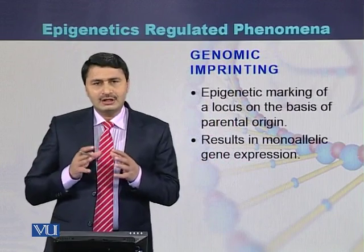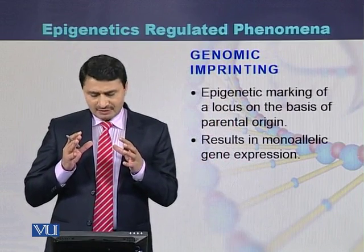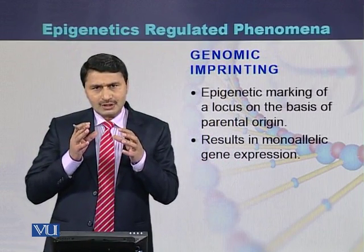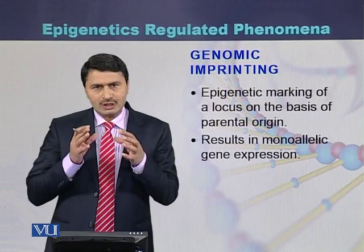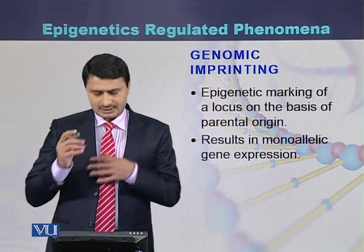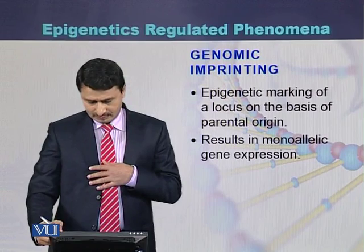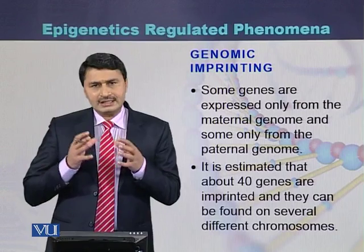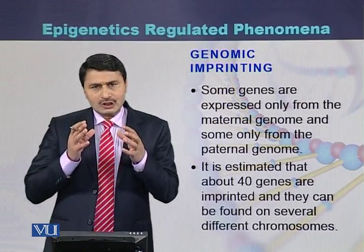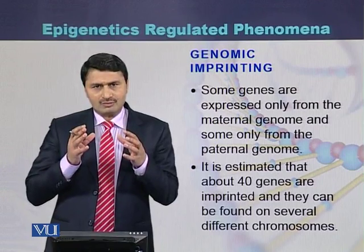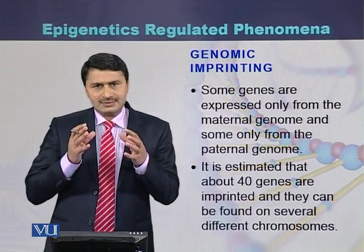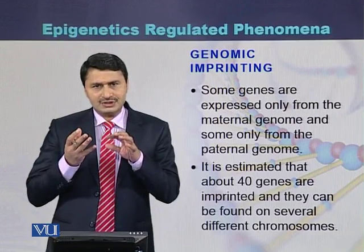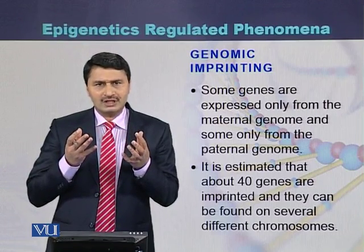Genomic imprinting is a phenomenon in which, out of two alleles, only one allele has expression. Individuals inherit two sets of chromosomes. Sometimes genes on one chromosome are active, while sometimes genes on the other chromosome are active.